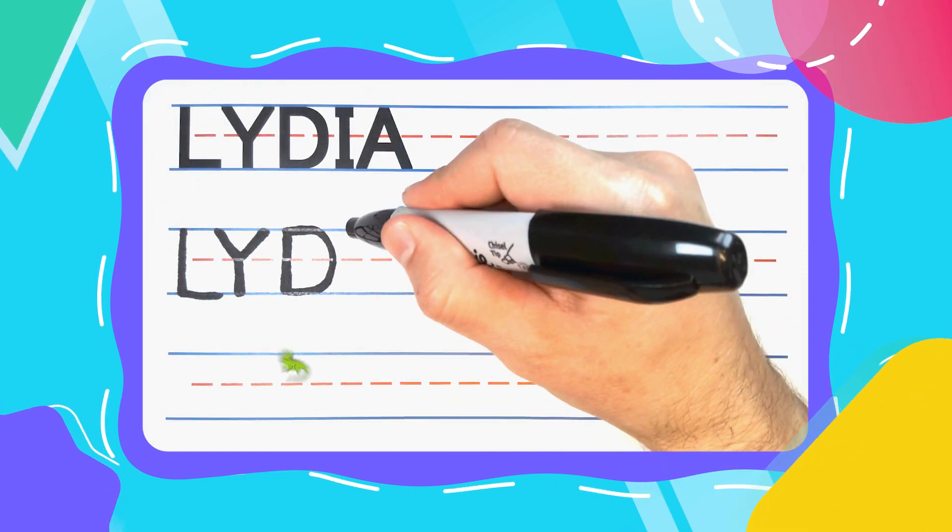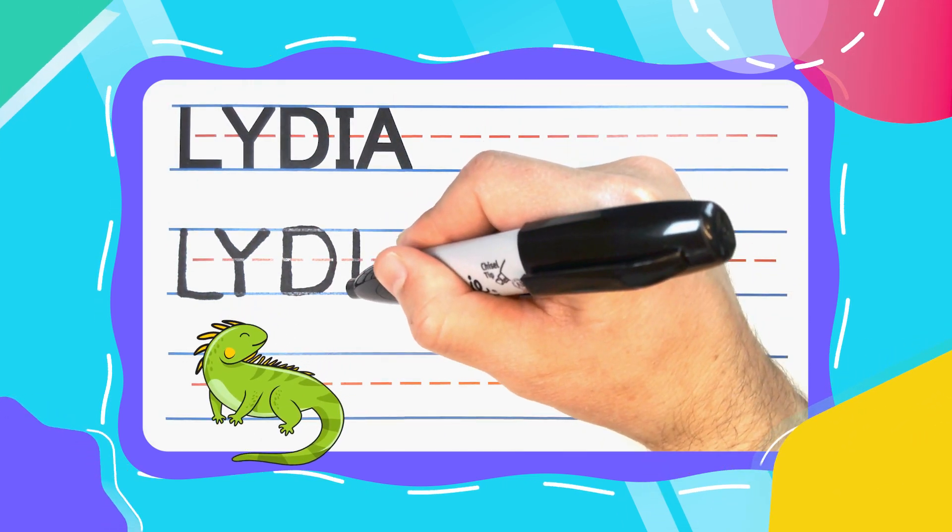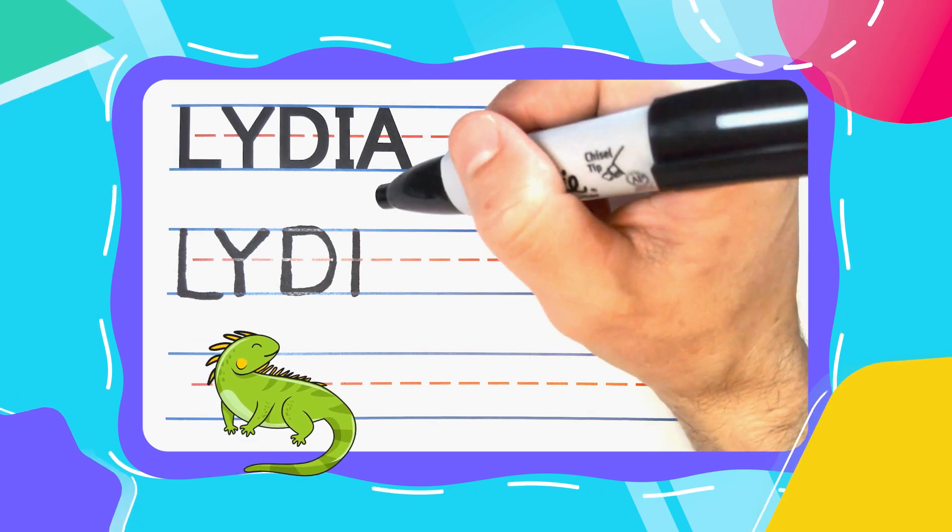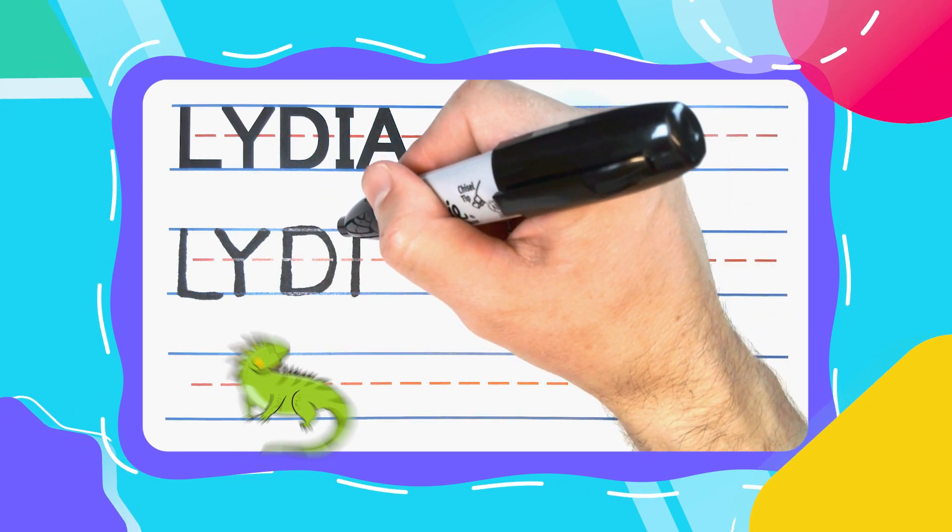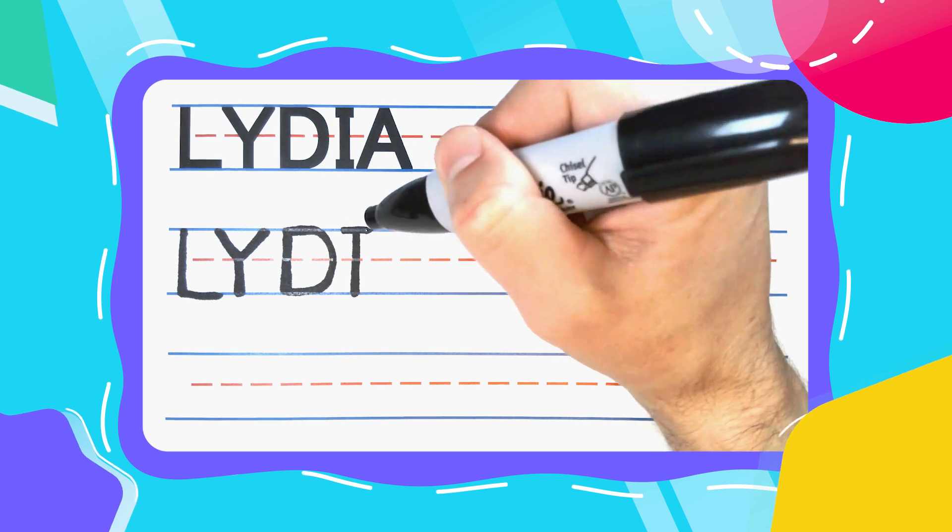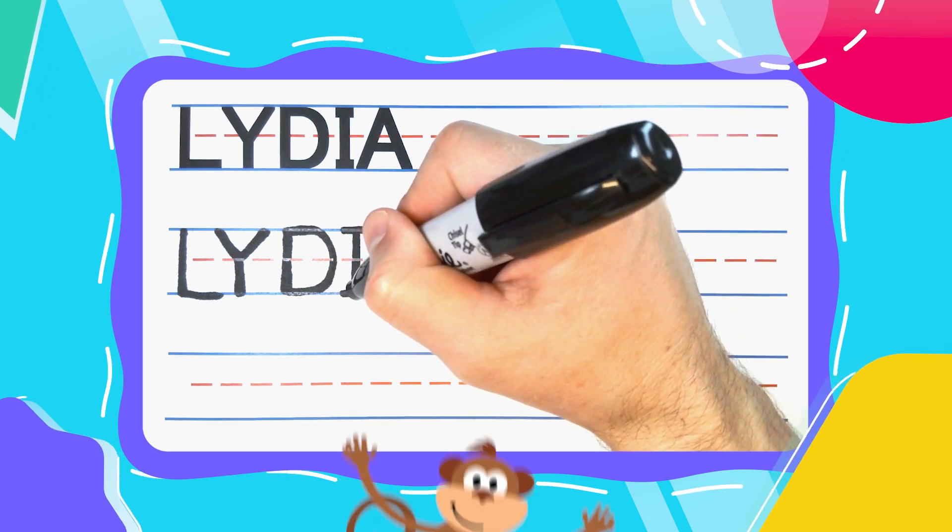The next letter is an Iguana I. And Iguana I's start with a straight line down. Then I give my I's a left to right hat and a left foot and a right foot at the bottom.